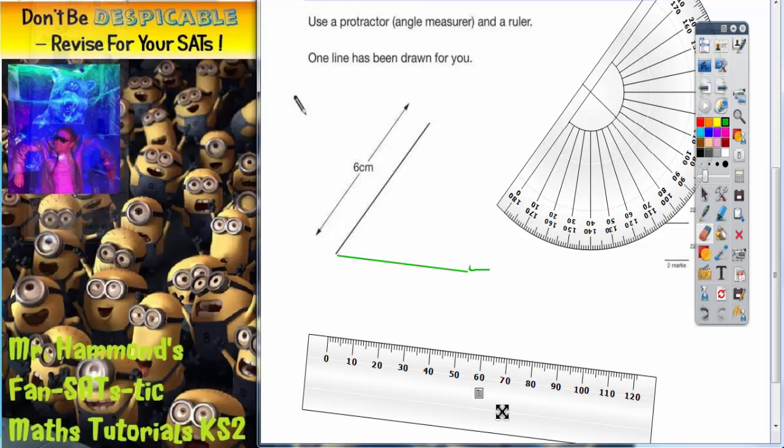Okay, so that line is an angle of 55 degrees with the other line, so we should really write that on. So we've got 55 degrees.